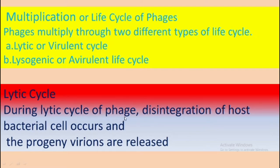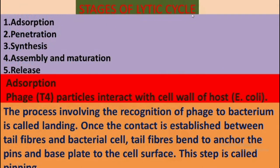During the lytic cycle, disintegration of the host bacterial cell occurs and the progeny virions are released. The infective stage of the virus is called virions, and they are released in the lytic cycle. There are five important stages of the lytic cycle: adsorption, penetration, synthesis, assembly and maturation, and release.